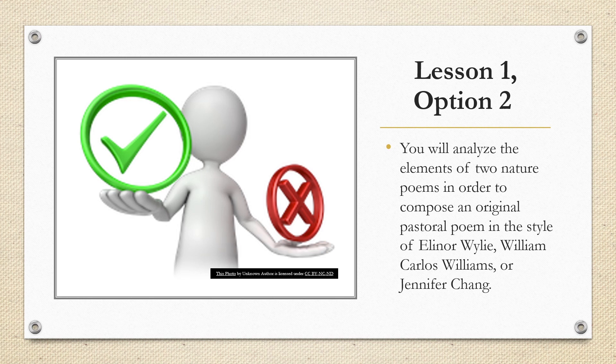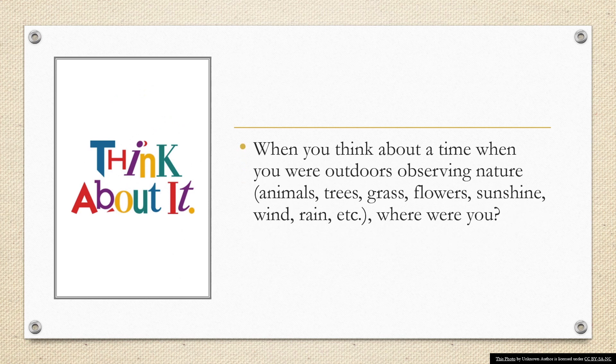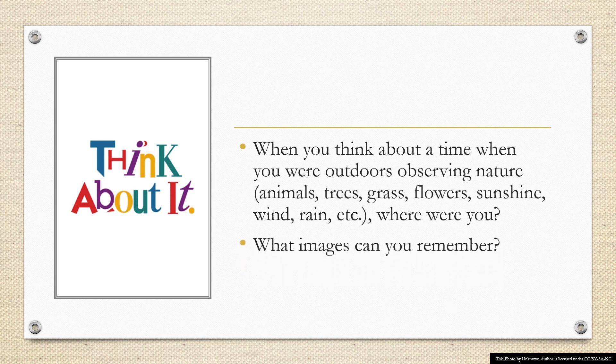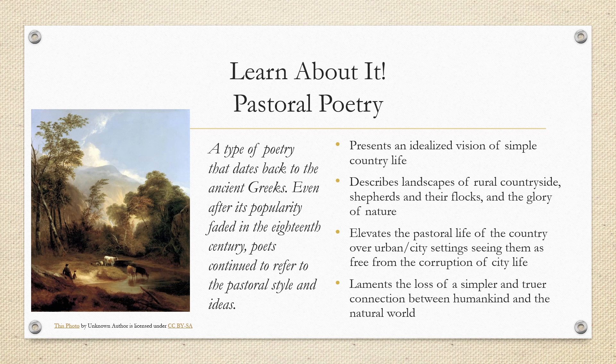Next, we'll take a look at Lesson 1, Option 2. In this lesson, you will analyze the elements of two nature poems in order to compose an original pastoral poem in the style of Eleanor Wiley, William Carlos Williams, or Jennifer Chang. Think about a time when you were outdoors observing nature — anything in nature: animals, trees, grass, flowers, sunshine, wind, any weather. Where were you? What images can you remember? What did you feel while you were there? Pastoral poetry is a type of poetry that dates back to the ancient Greeks. Even after its popularity faded in the 18th century, poets continued to refer to the pastoral style and ideas.